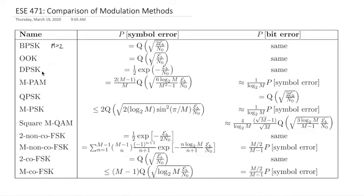When M is equal to 2, as in BPSK or on-off keying or DPSK or 2-ary FSK, then the bit error is going to be the same as the symbol error because one symbol is one bit.